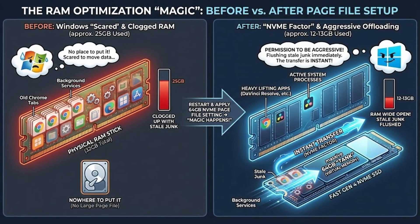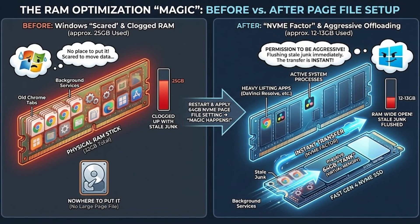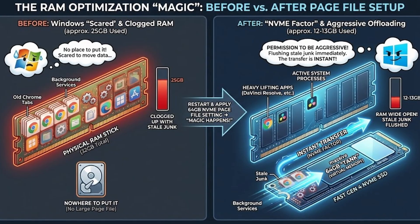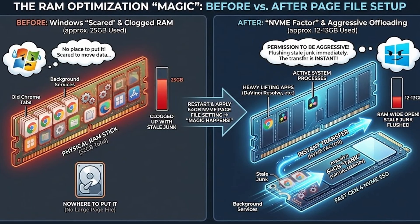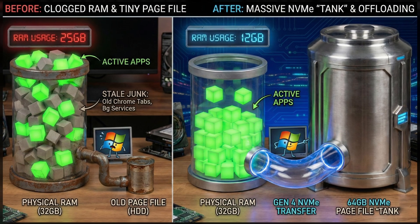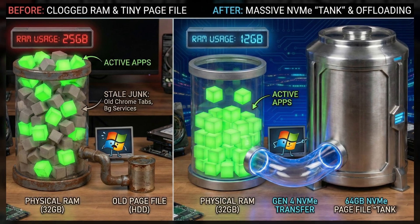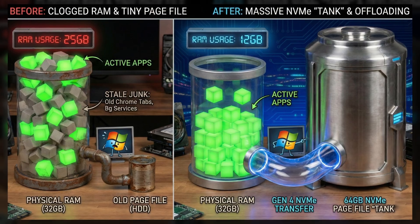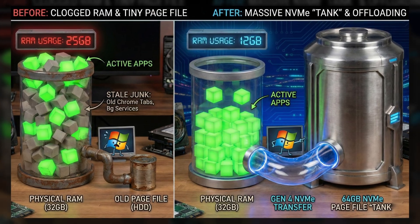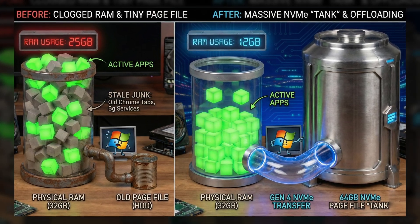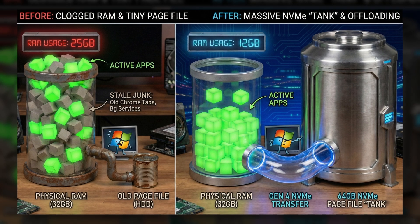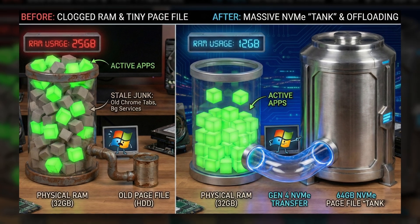Before this, Windows was scared to move data out of RAM because it had nowhere to put it, so it kept every old Chrome tab and background service clogging up the actual memory stick. By giving it this massive 64-gigabyte tank, Windows now has permission to be aggressive — it immediately flushes all that stale junk onto the SSD, leaving the actual physical RAM wide open for the heavy lifting.